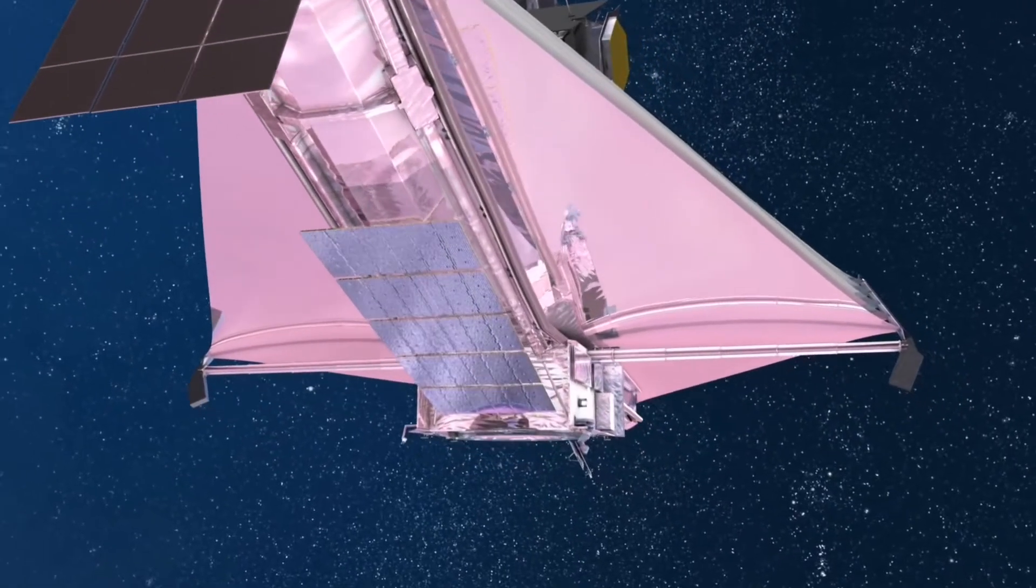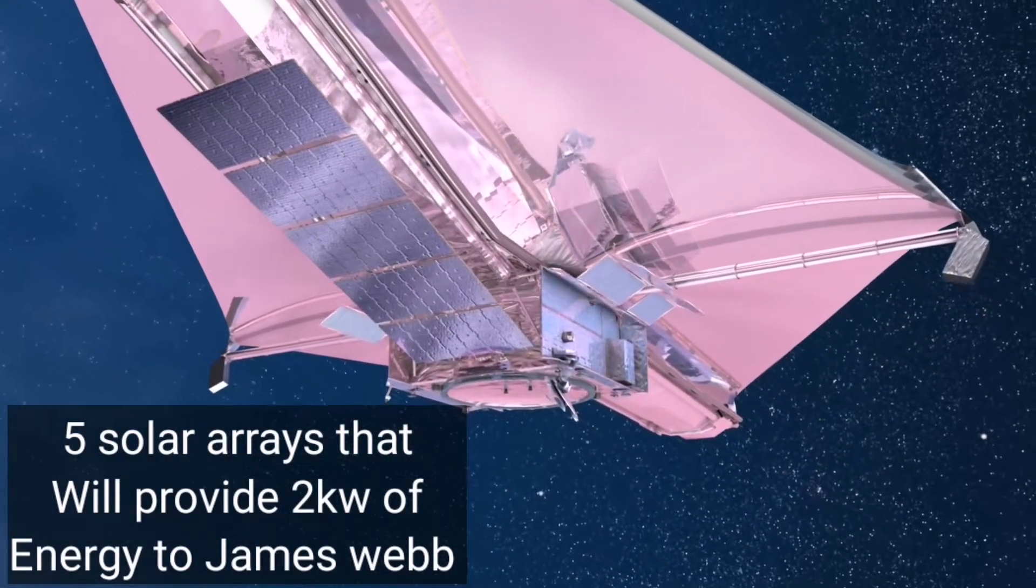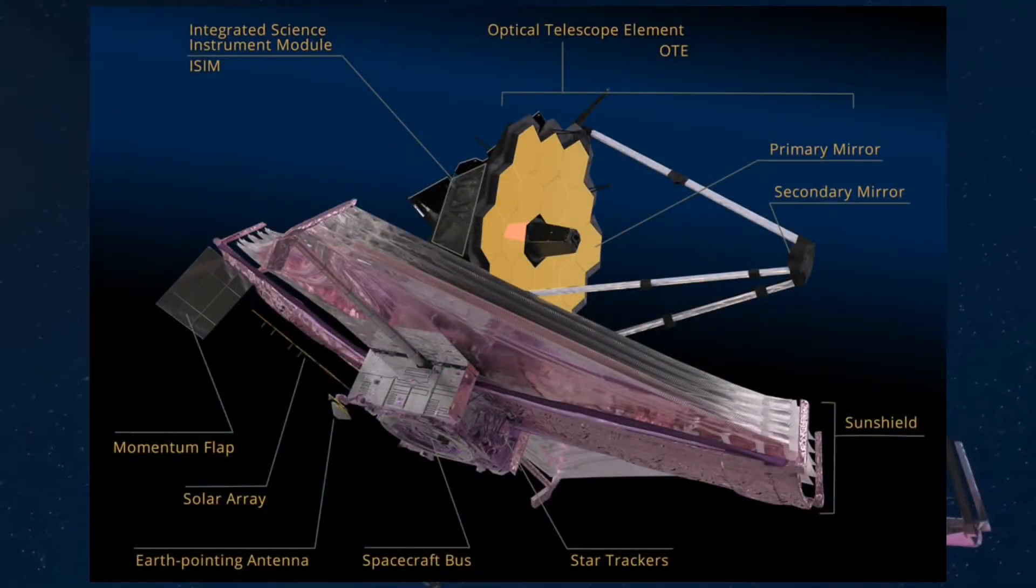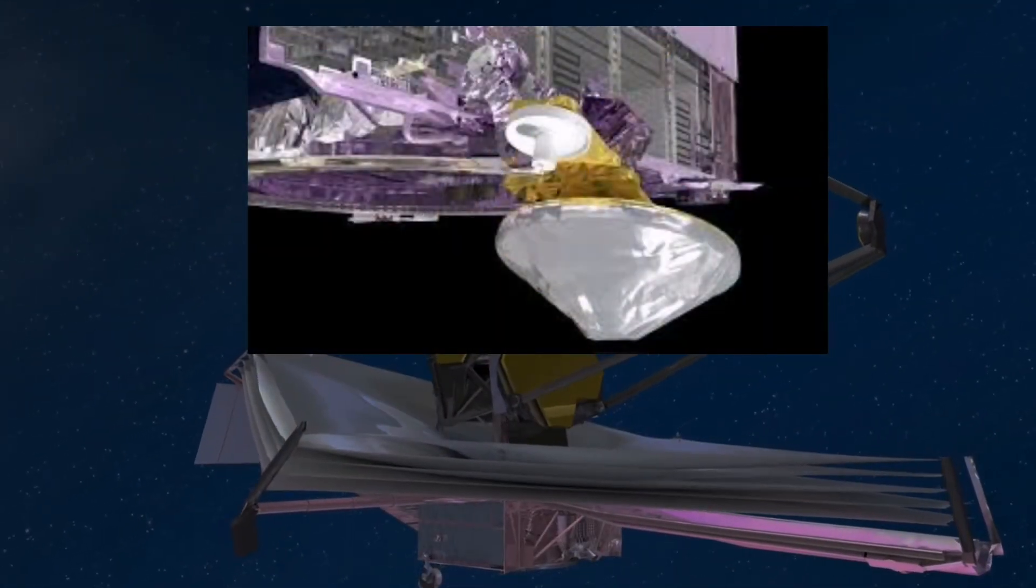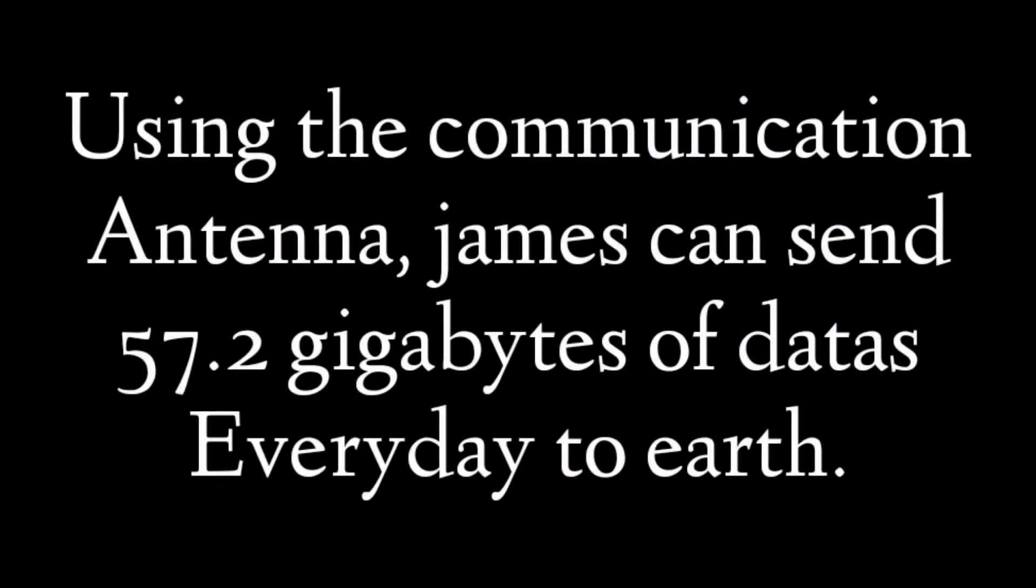James Webb also has five solar arrays that are supposed to supply James Webb with two kilowatts of power for the duration of the mission. There is also a communication antenna that sends information back to earth, which will be at least 28.6 gigabytes of information twice a day. In other words, James Webb can send 57.2 gigabytes of information to earth. It doesn't mean that James Webb have to send this amount of information every day. It just means that James Webb has the ability to send this amount of information every day.